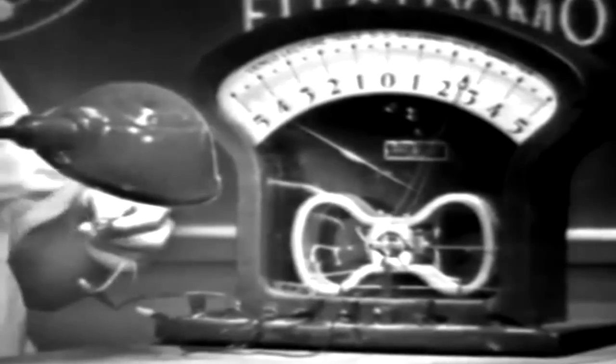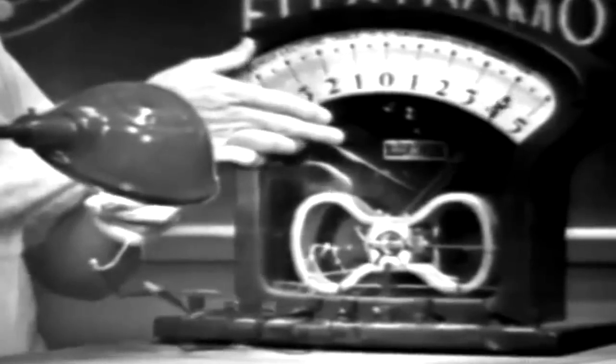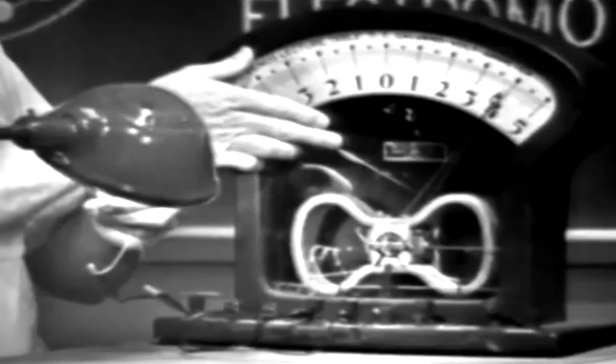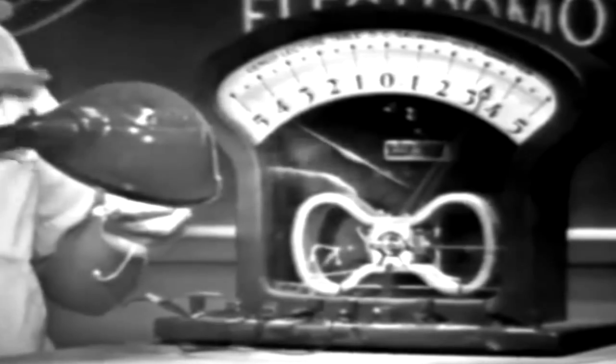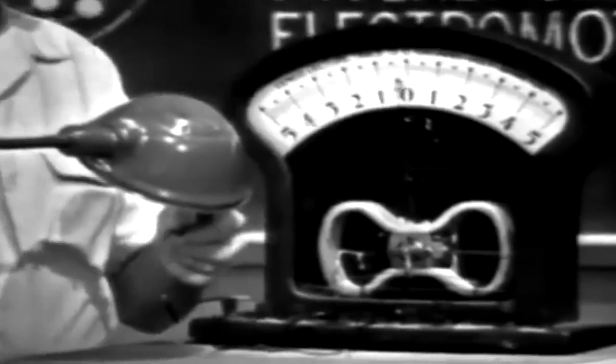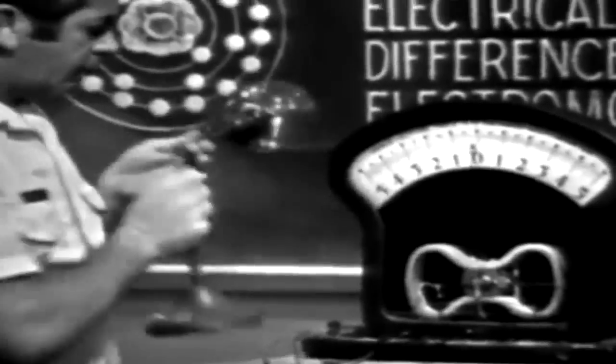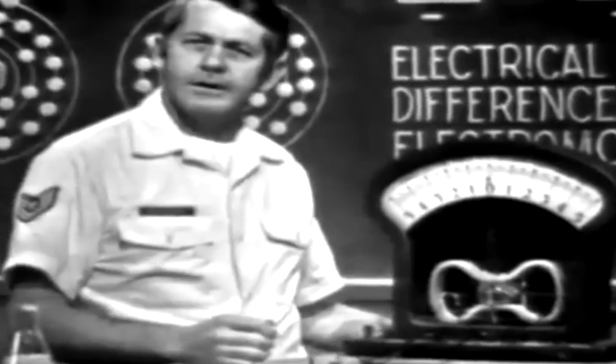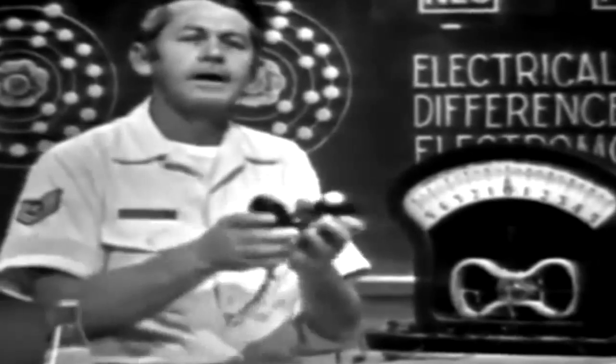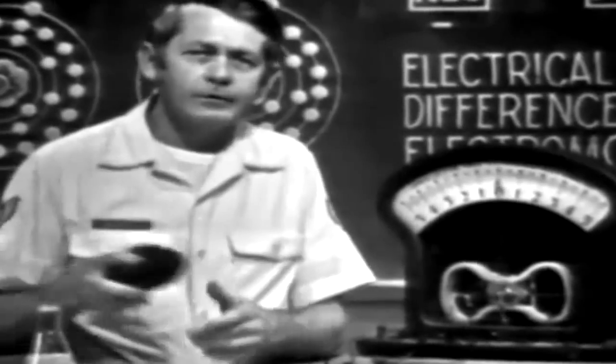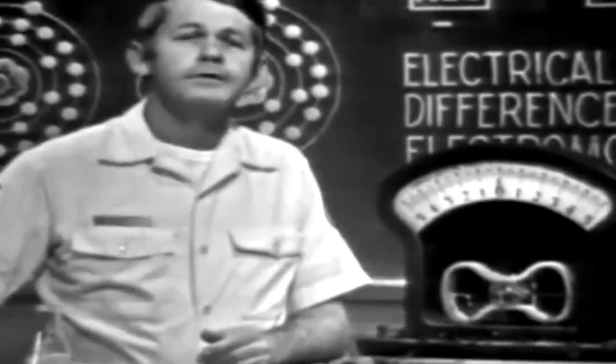Now, if I bring the device closer to the light, notice that the amount of voltage increases. More light, more voltage. Quite an amazing little device. Now, some uses of the photoelectric effect are to indicate light intensity, as in this light meter, and the solar batteries used to supply voltage in some space vehicles.